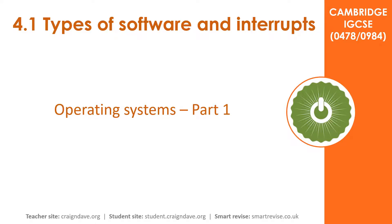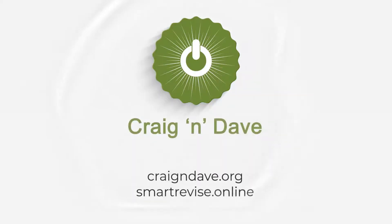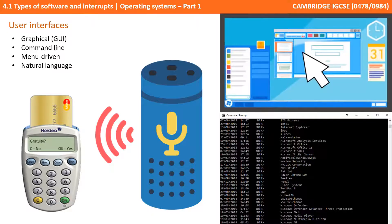In this video we look at some of the features of an operating system in a little bit more detail. In the previous video in this topic we looked at a range of user interfaces: graphical, command line, menu driven and natural language. Refer back to that video because user interfaces are an important feature of operating systems. But in this video we're going to look at some of the more technical aspects of operating systems.